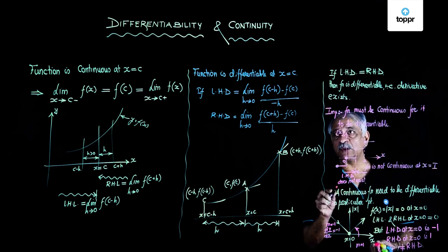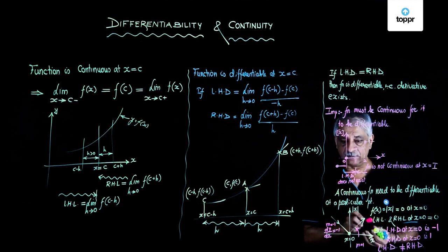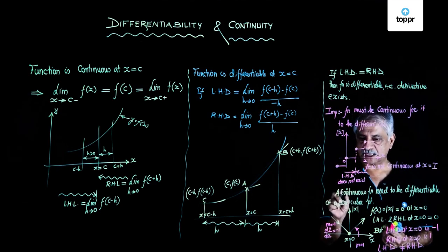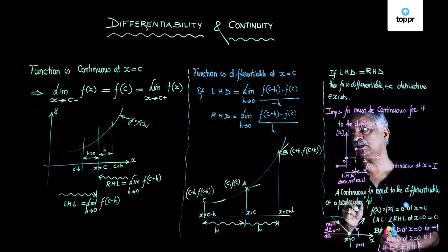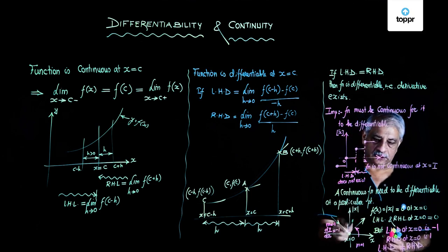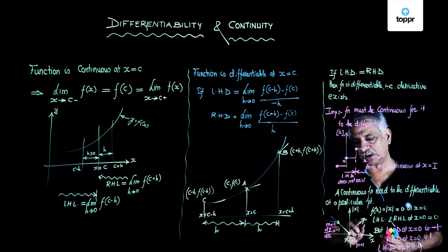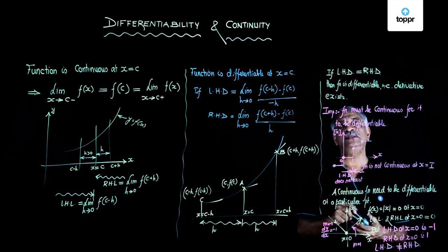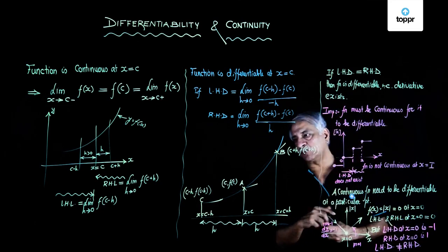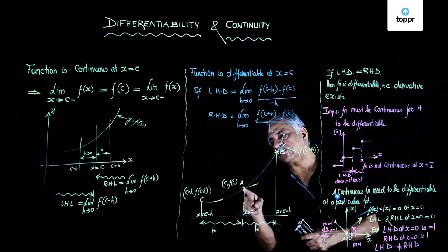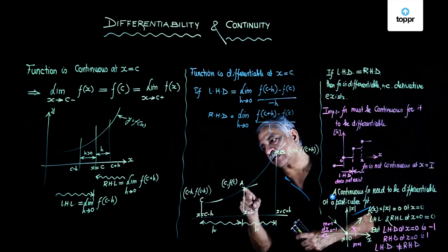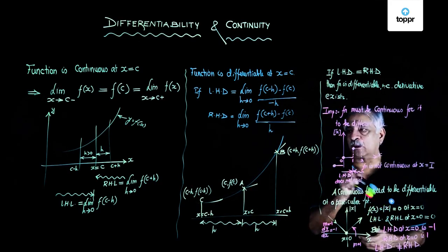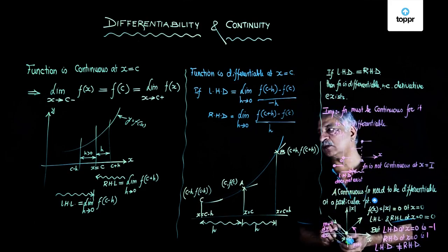A very important conclusion: a function must be continuous to be differentiable. Secondly, a continuous function need not be differentiable at a particular point — it may be continuous but not differentiable, as shown by the mod function example. Whereas a differentiable function is always continuous, because differentiability automatically tells us that it is continuous and both limits exist. So a differentiable function is always continuous, whereas a continuous function need not be differentiable.